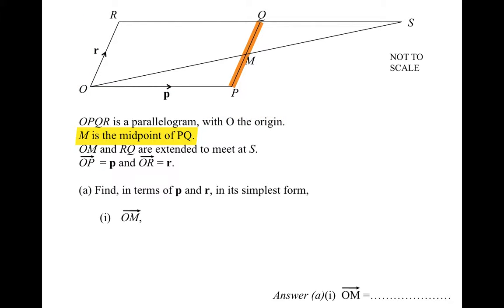M is the midpoint of PQ, so PQ is a line from P to Q and M is in the middle. Then it says OM and RQ are extended to meet at S, so OM is the line from O to M and RQ, and both of those lines are extended until they meet. S is the point where that happens.